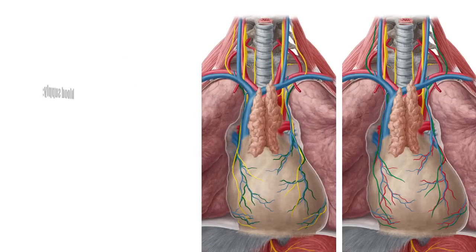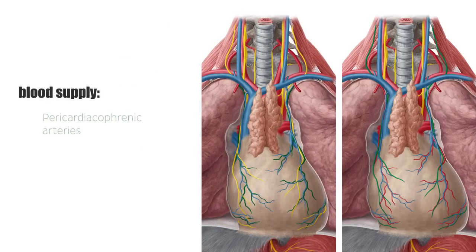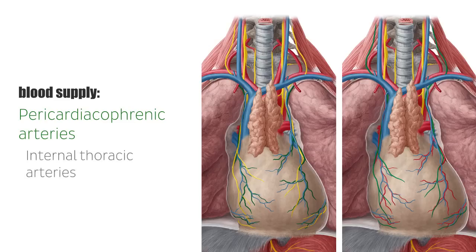The blood supply of the pericardium comes from the pericardiacophrenic arteries and the internal thoracic arteries. The internal thoracic veins are responsible for the venous drainage of the area.